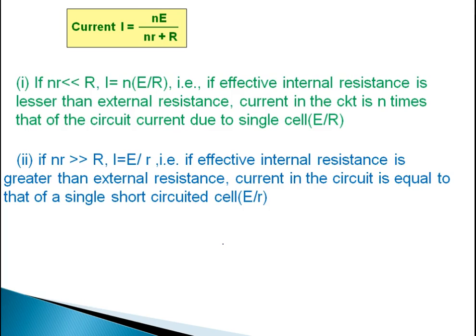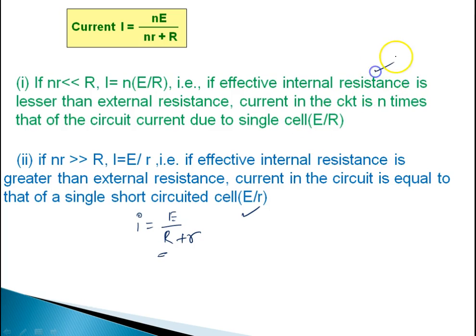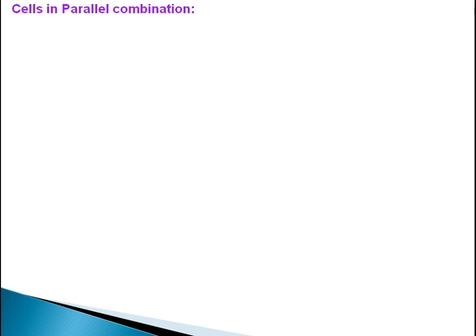The short circuit current is I equal to E upon r, since R is negligible. Series combination is used when external resistance is high compared to internal resistance. Next, we will discuss cells in parallel combination.